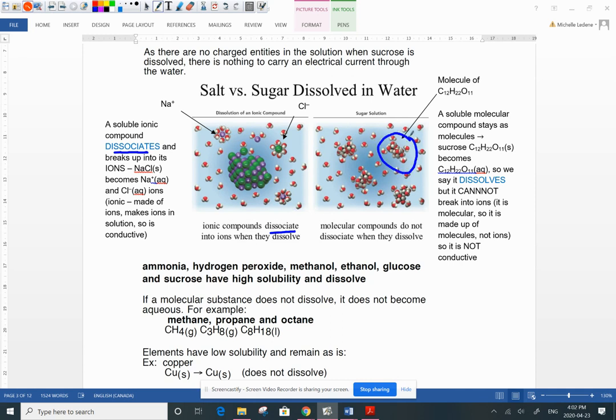Molecules can't make ions. They're made of molecules, not ions. So it only dissolves, it's not going to become ions. We say that it dissolves, but it does not dissociate.